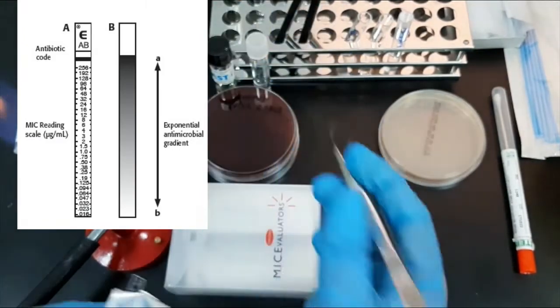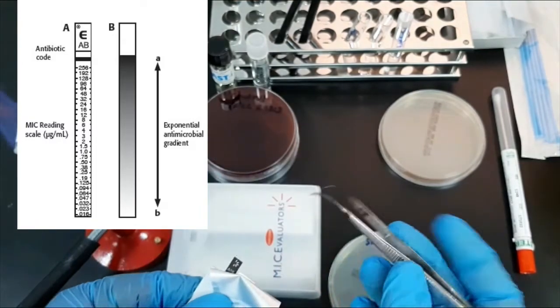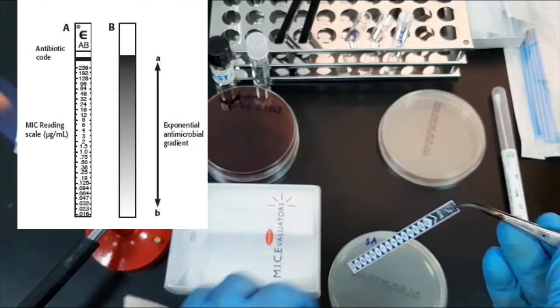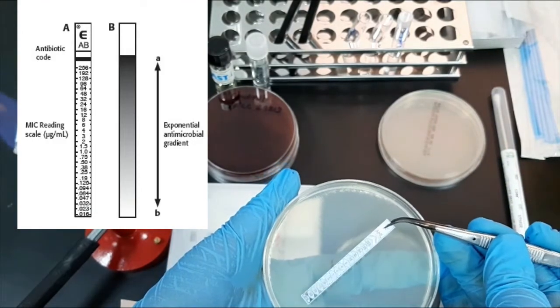With the help of a sterile forcep, hold the end of the strip that shows the antibiotic code. Gently drop the E-strip onto the agar surface with MIC scale facing upwards.